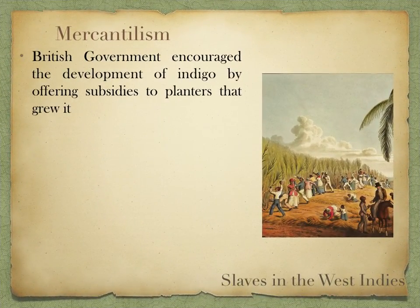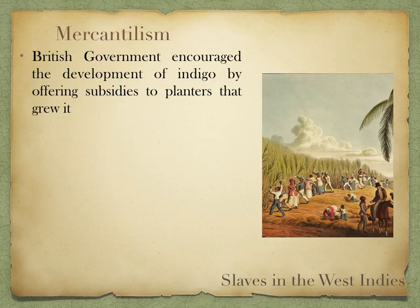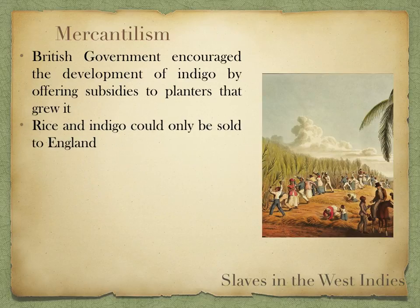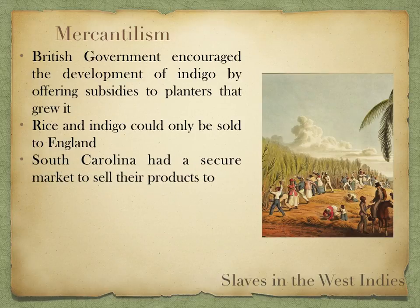The British government encouraged the development of indigo by offering subsidies to planters that grew it. A subsidy is when they give a little bit more money for growing it. If you set up in South Carolina and decided to grow indigo, the government would give you money to grow it. Rice and indigo could only be sold to England, but South Carolina got rich because they had a secure market to sell their products to — they knew the English people were going to buy those products.